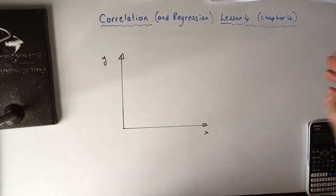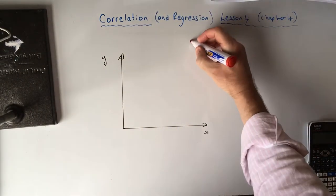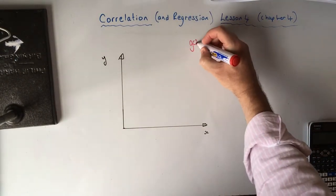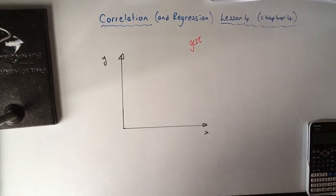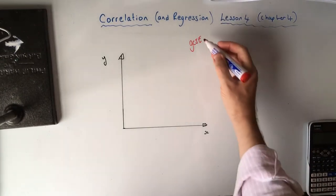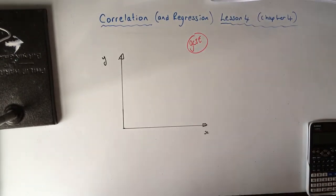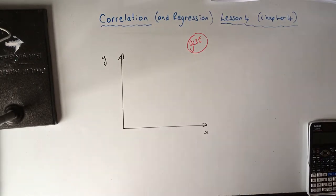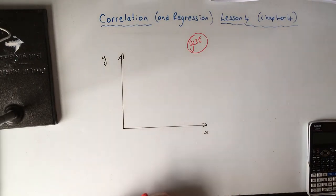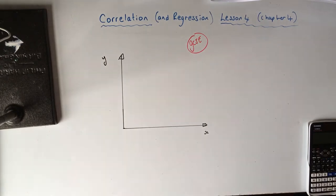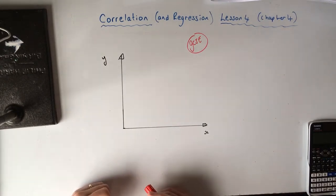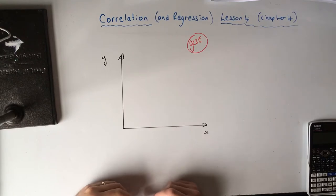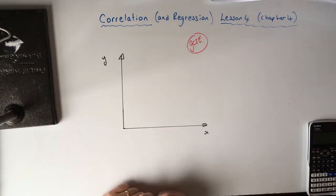I'm just going to waffle a little bit. I'm going to talk about GCSE here — what we know from GCSE. I want to start with GCSE because at A-level it just grows up a little bit. It's asking you to think a little bit more about correlation and your lines of best fit, so it just ups it really. So what do we know from GCSE?